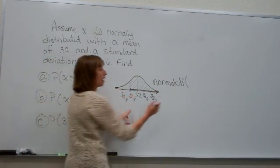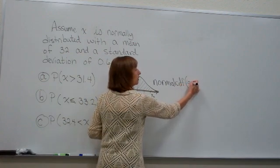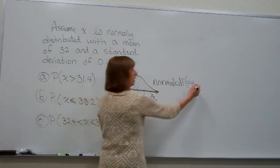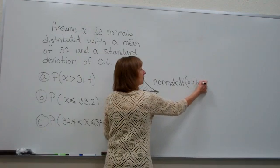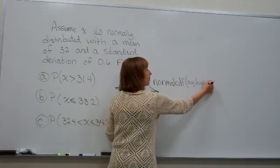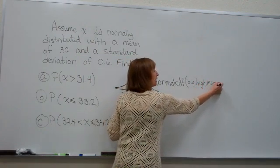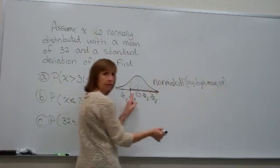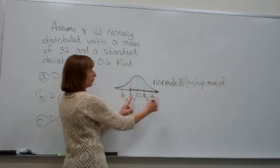And that's the key that will help us find the numerical value for this probability. Now, the NORMALCDF, it wants the low number of the ones that you're interested in, comma, the high number that you're interested in, comma, the mean of the distribution, comma, the standard deviation of the distribution.